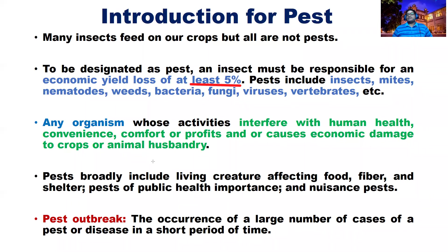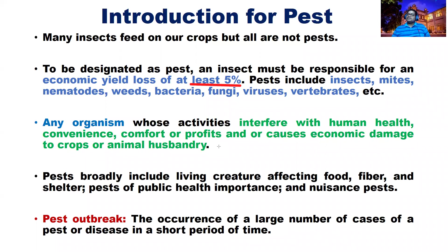In your kitchen, beetles attack bread, wheat flour, and rice grains. Cockroaches in the home and house flies sitting on food transmit diseases to human beings — this is what we call inconvenience. If your pest is attacking your field, you will lose your profits. That is why we call these organisms pests.